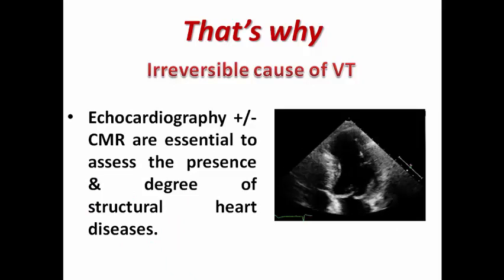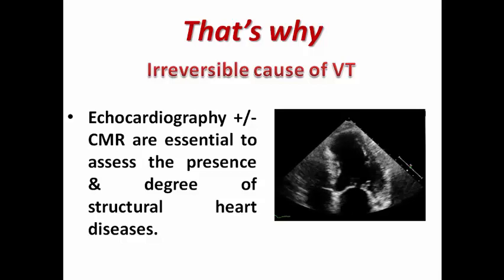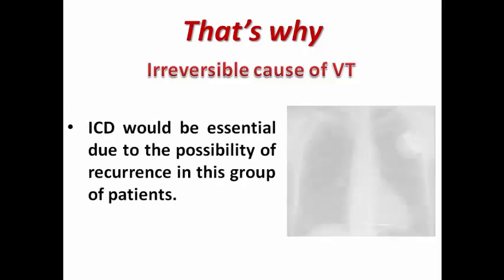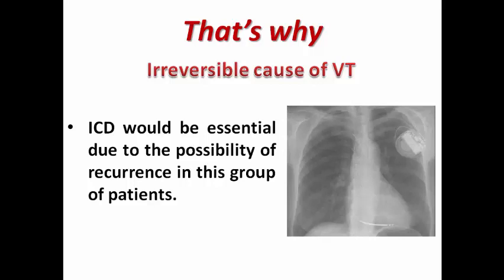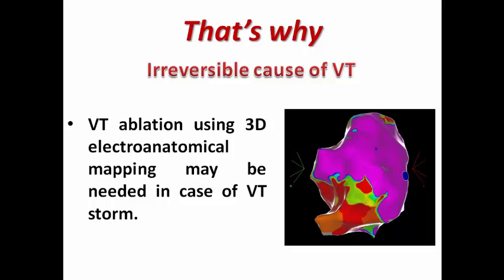Echocardiography is a cornerstone in this case, and sometimes cardiac MRI is needed to assess the presence and degree of structural heart disease — especially for hypertrophic cardiomyopathy or arrhythmogenic RV cardiomyopathy — including gadolinium to assess late gadolinium enhancement. ICD is essential due to the possibility of VT recurrence, to terminate VT episodes by ATP or cardioversion and VF by defibrillation. VT ablation using 3D electro-anatomical mapping may also be needed to reduce VT recurrence in cases of VT storm.